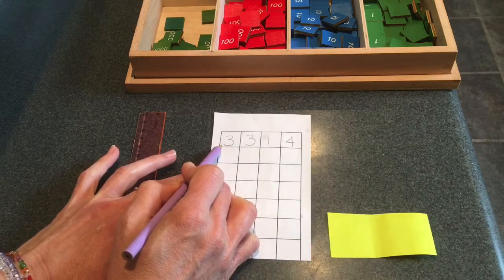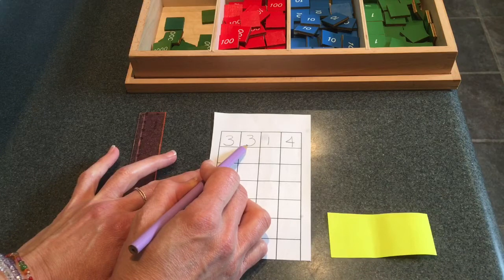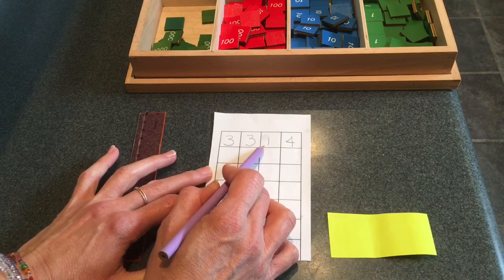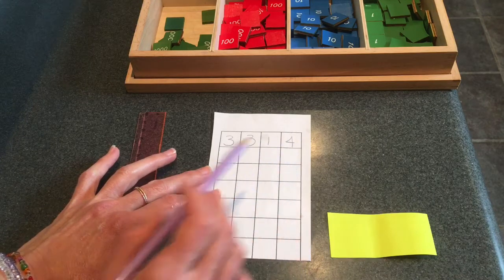How many thousands? That's right, three. How many hundreds? Yep, three again. How many tens? Just one. And how many units? That's right, four.